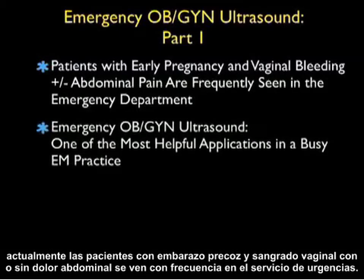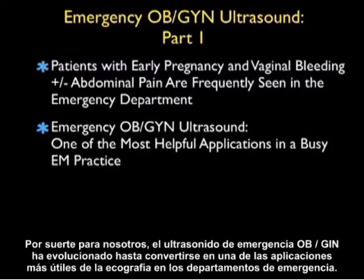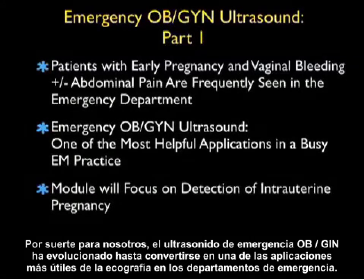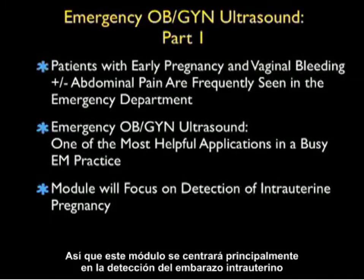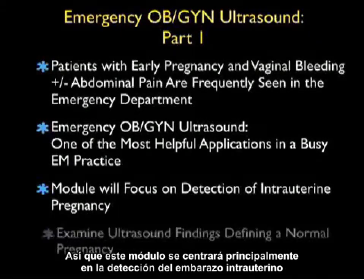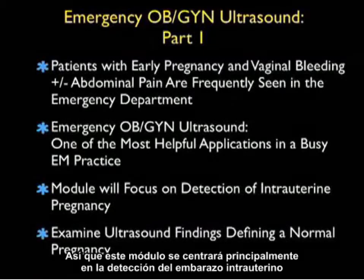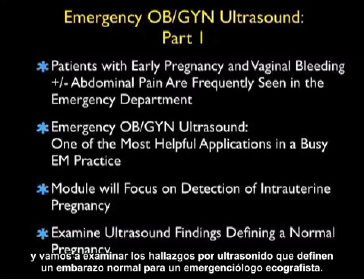Patients with early pregnancy and vaginal bleeding with or without abdominal pain are frequently seen in the emergency department. Emergency OBGYN ultrasound has evolved to be one of the most helpful applications of sonography in a busy emergency medicine practice. This module will focus primarily on the detection of intrauterine pregnancy and we'll examine the ultrasound findings that define a normal pregnancy for an emergency physician sonographer.